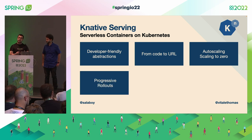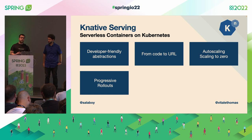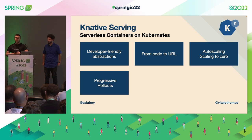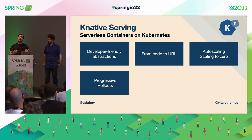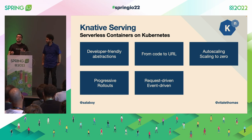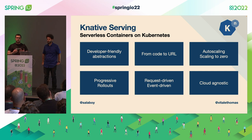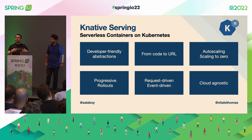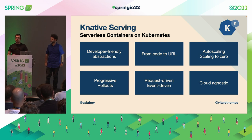On top of that we have the possibility to adopt very advanced deployment strategies — progressive rollouts. We can deploy using blue-green deployments, canary releases, and progressive delivery, all through the same single abstraction without dealing with low-level platform concerns. Everything is request-driven or event-driven — that's how auto-scaling happens. And finally, this is cloud agnostic. Since we have this component deployed in Kubernetes, we can use Knative everywhere on every Kubernetes distribution, on any public cloud or running locally.